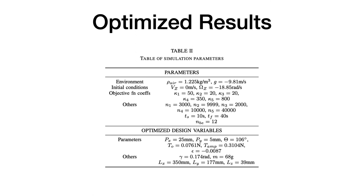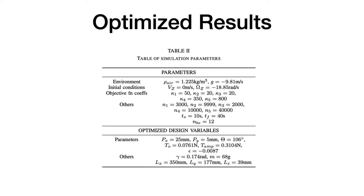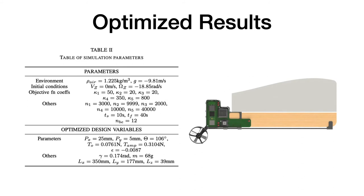The table here shows the parameters used for the simulation and objective functions. Also shown here are the optimized design and control variables. The optimized location and orientation of the thruster is found and it is shown in this image. It is located near the seat and pointed upwards and slightly backwards.